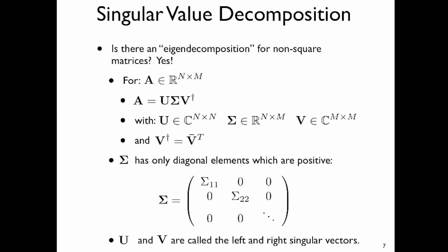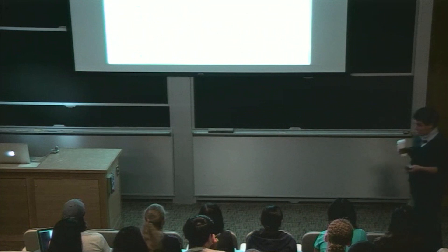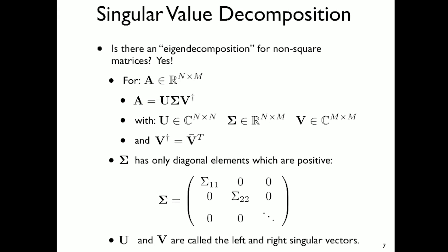Sigma is like lambda from before — it's a diagonal matrix, only with diagonal elements, though it's not square. All diagonal elements will be positive. U and V are called the left and right singular vectors. All matrices have a singular value decomposition. We saw that with eigendecomposition, eigenvectors can be degenerate and the decomposition may not exist. But all matrices are going to have this SVD decomposition.